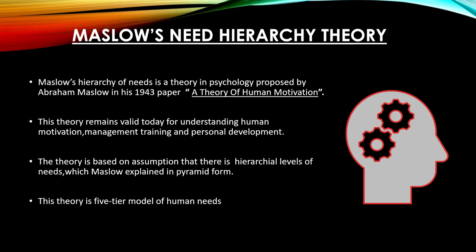Maslow's Need Hierarchy Theory is a content theory of motivation. The content theory of motivation says that the needs motivating an individual should be explained, so Maslow explains the need which motivates an individual. He also assumes there is not one but a hierarchy of needs which an individual has to satisfy. This hierarchy is very strict — till the time a lower order need is not satisfied, an individual cannot move up in the ladder.